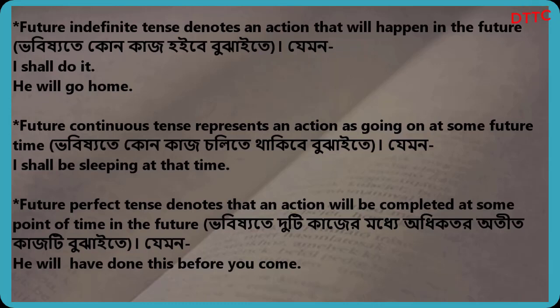Future perfect tense denotes that an action will be completed at some point of time in the future. For example: He will have done this before you come.